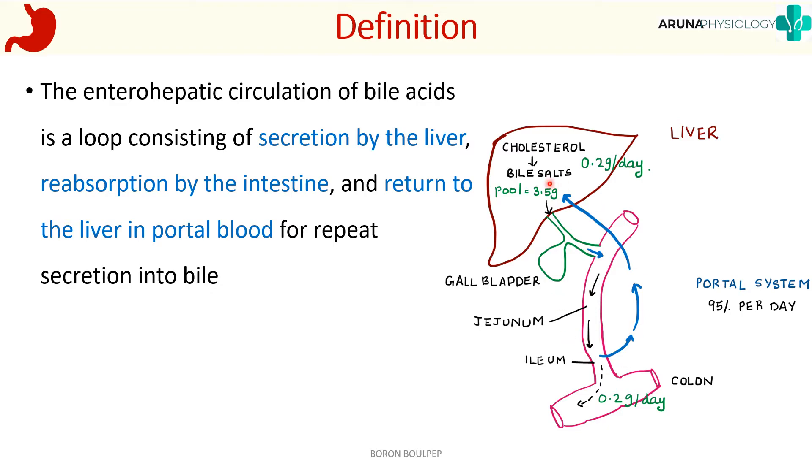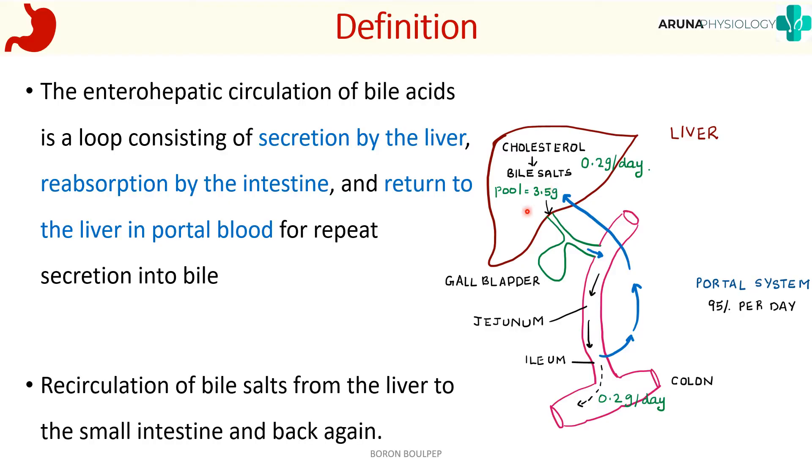Basically, this loop is called the enterohepatic circulation, or in simpler terms, it is a recirculation of bile salts from the liver to the small intestine and back again. That is what is meant by enterohepatic circulation.